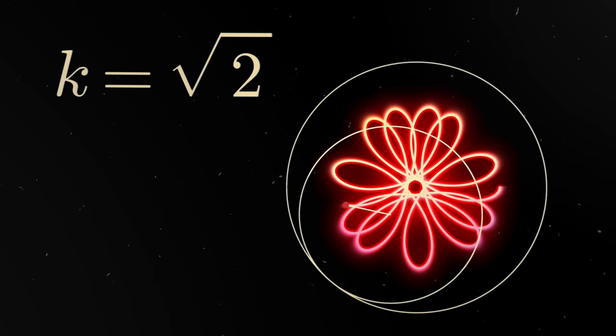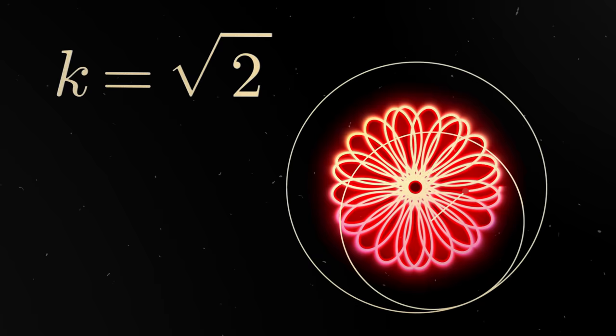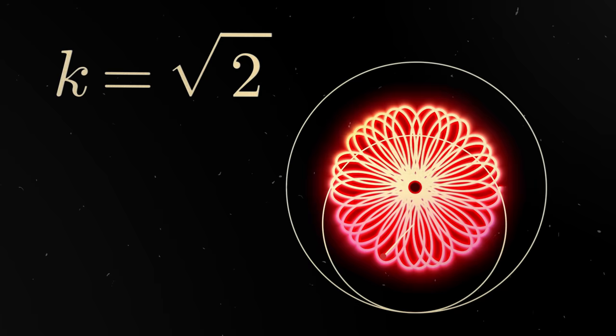If the number K is irrational, meaning that it cannot be represented as a fraction, then the curve is not closed and has infinite rays. For example, this is what a flower with a coefficient equal to a square root of 2 looks like. Beautiful, isn't it?